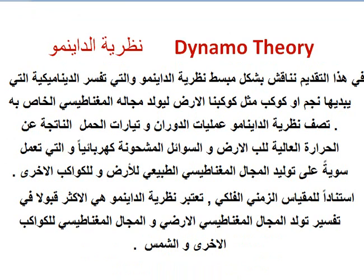In this presentation we are going to discuss in a simple way the magnetic dynamo, or geodynamo theory, and how a certain planet, like our planet Earth, generates its own magnetic field. The geodynamo theory describes the rotation of magma currents and the effect of convection currents within the outer core zone of the Earth. According to astronomy, the geodynamo theory is considered the most acceptable one in interpreting the generation of the Sun, planets, and Earth's natural magnetic field.